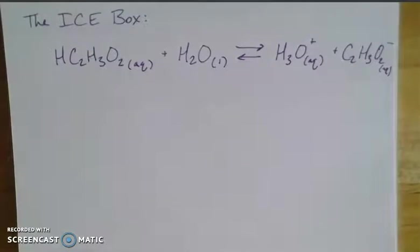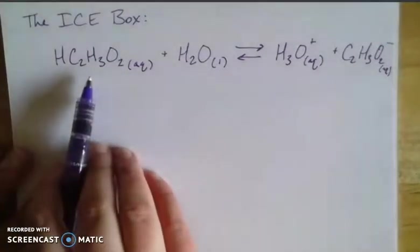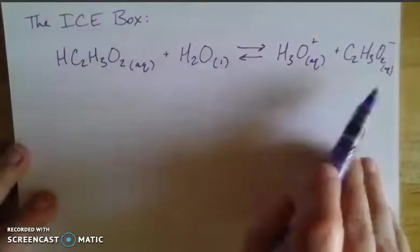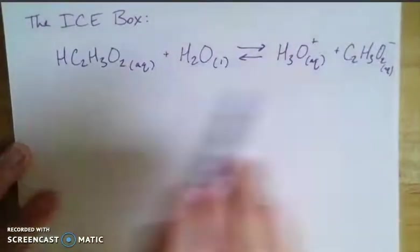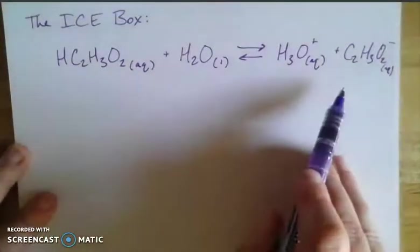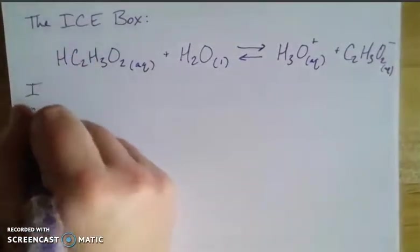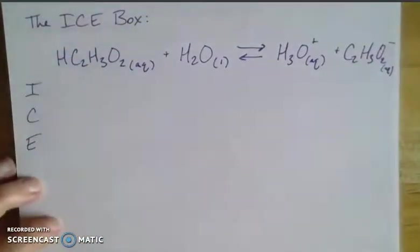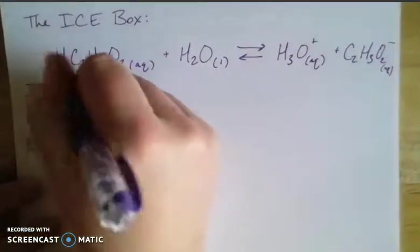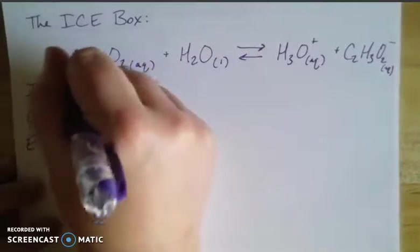Now the ICE box for this problem is going to be built around the buffering system. So we said we have this buffer. It's made of acetic acid and the acetate ion. So the system we're really looking at is this weak acid equilibrium. So when we build the ICE box, using the numbers that we just had. So we're doing our moles divided by our concentration gives us 4.5. That's 4.5 times 10 to the negative 2.